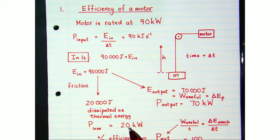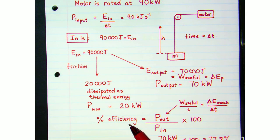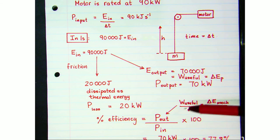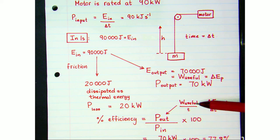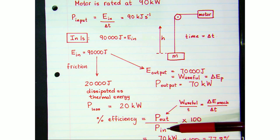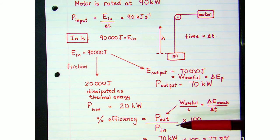We can then work out the efficiency of this motor. Percentage efficiency is a ratio — a ratio of the output power, which is the useful work being done per second, where the useful work being done represents a change in mechanical energy.